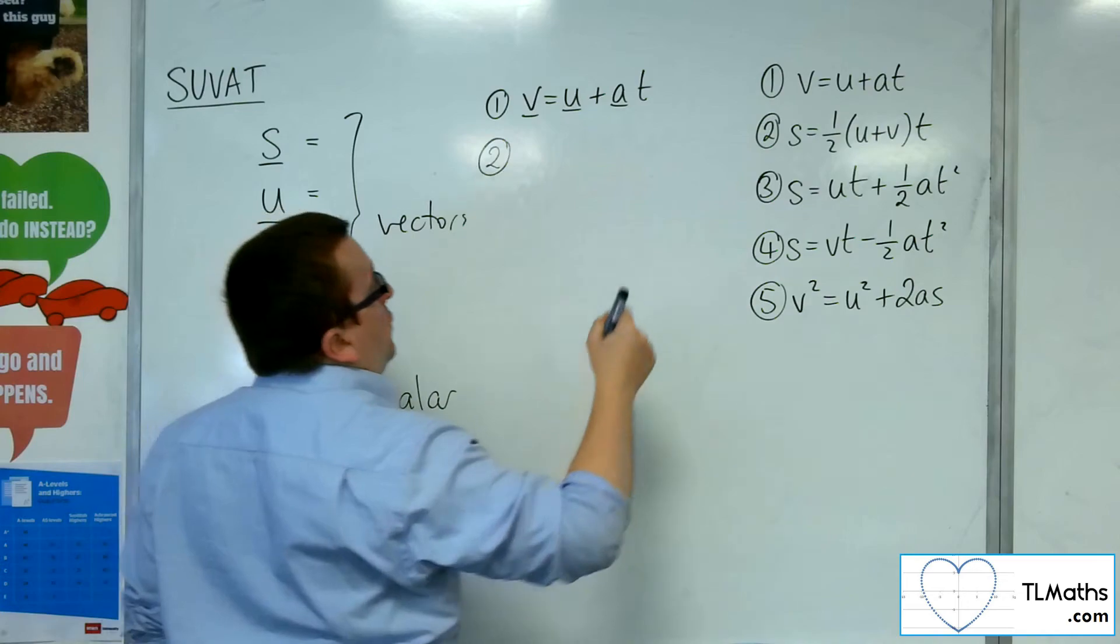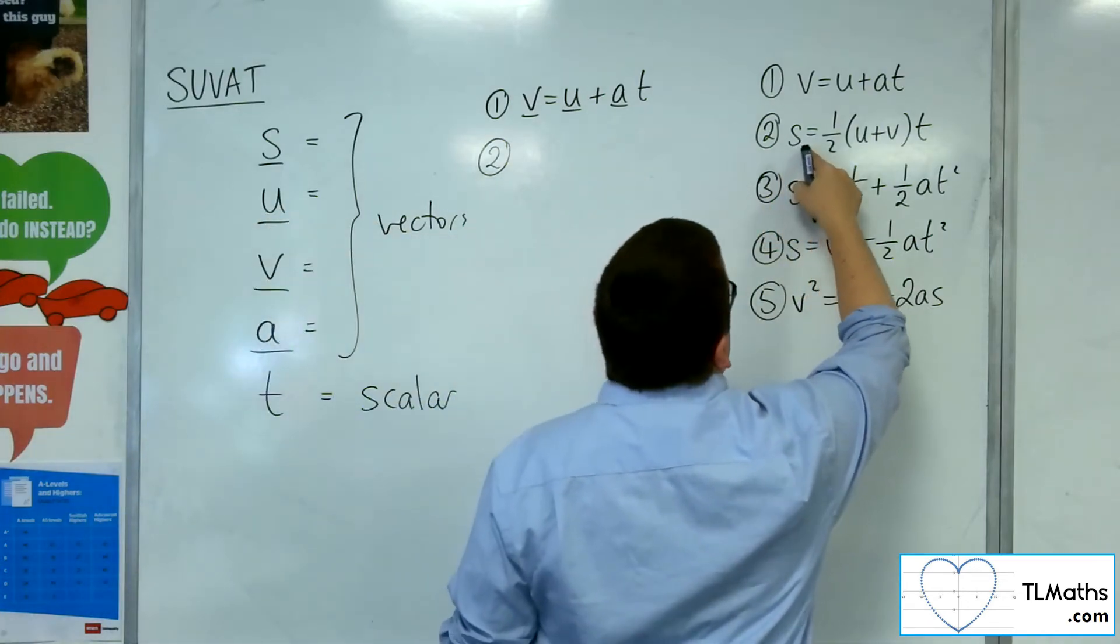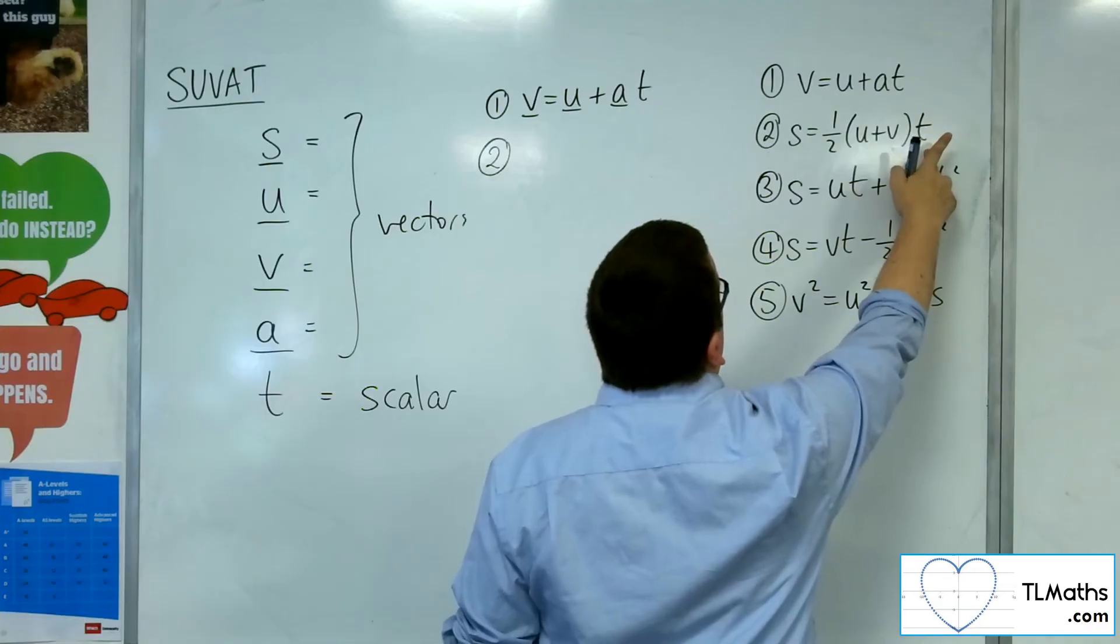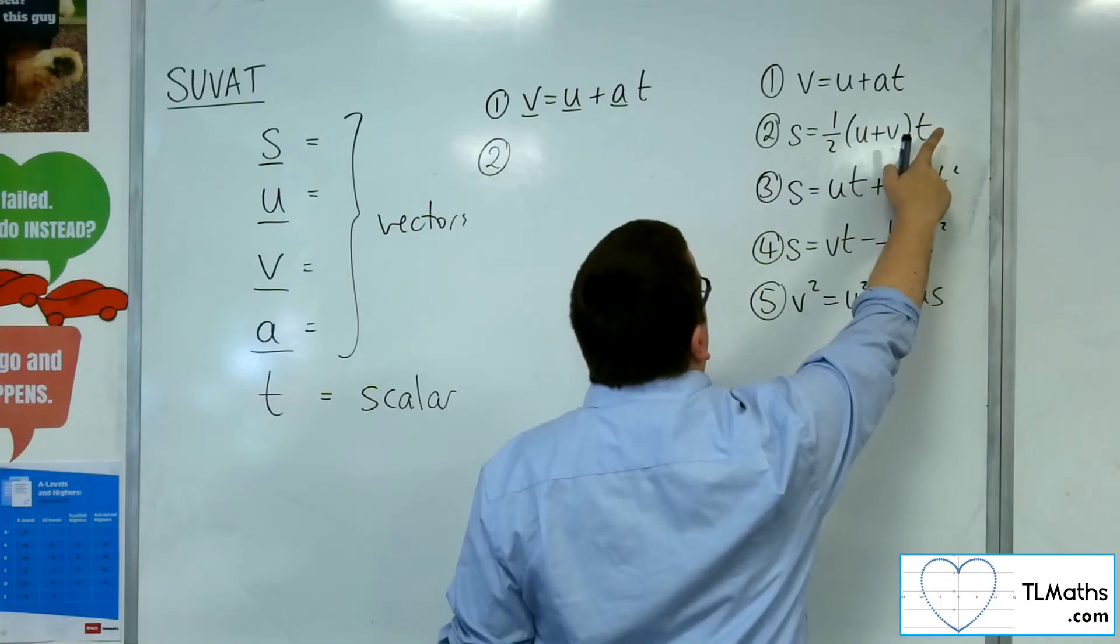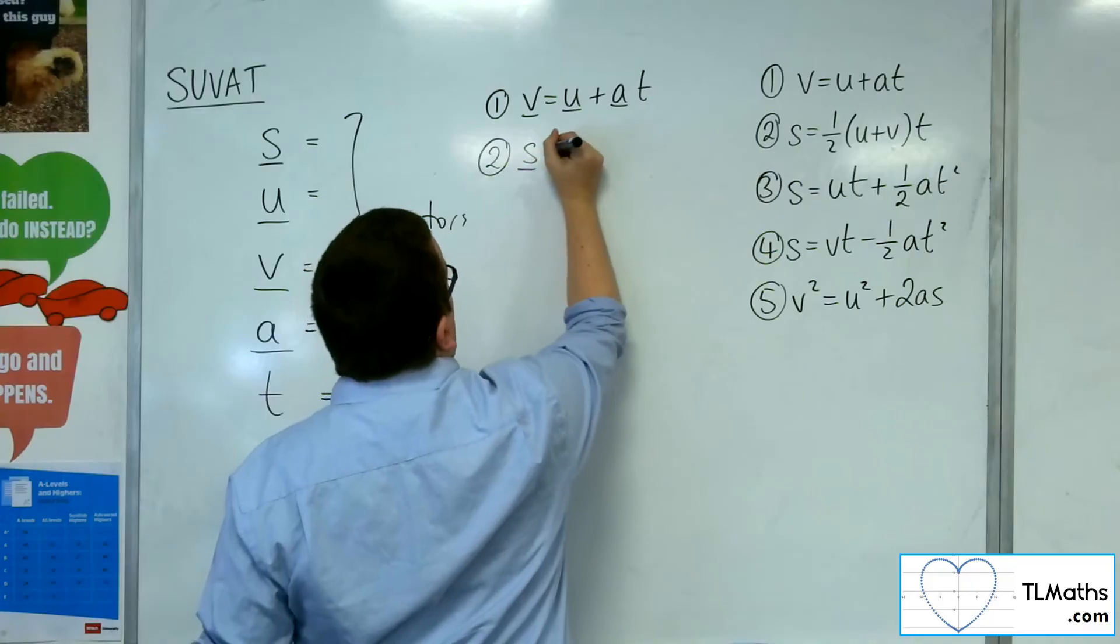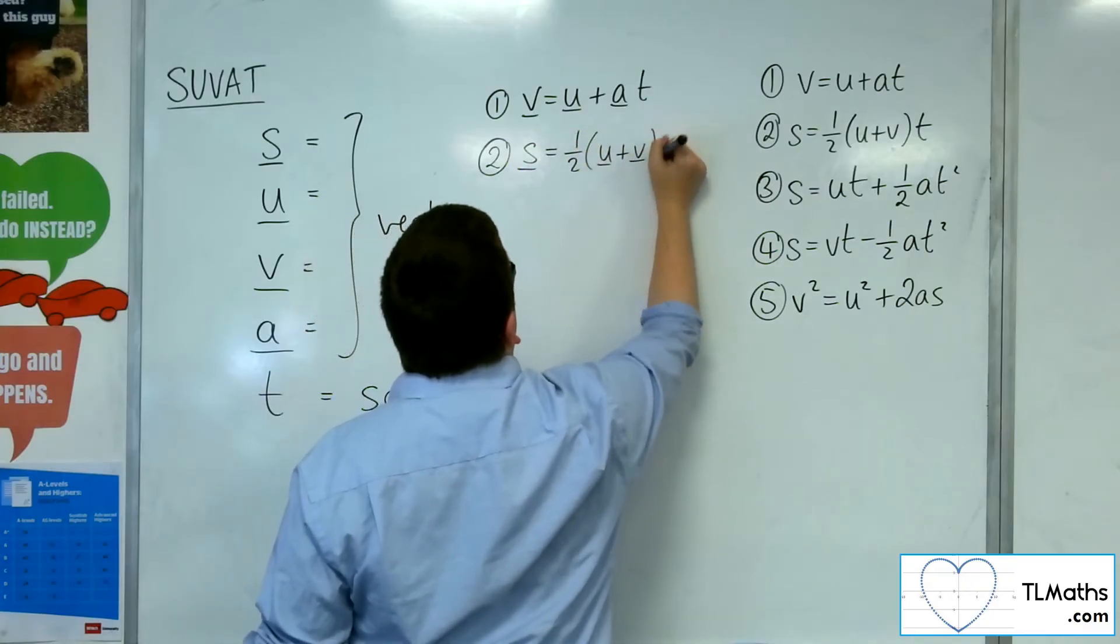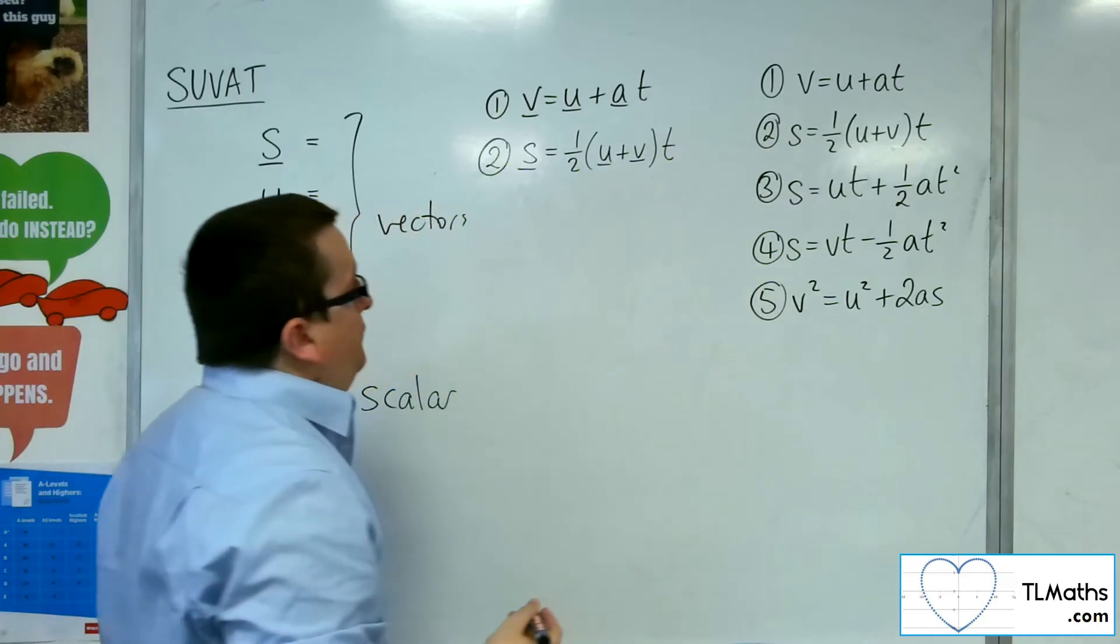For the second one, we've got S, a vector, equal to a half of adding two vectors together, multiplied by a constant, multiplied by the scalar. So that's fine also. S equals one half U plus V times T.